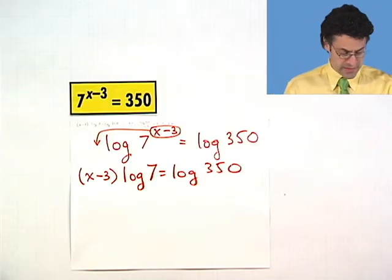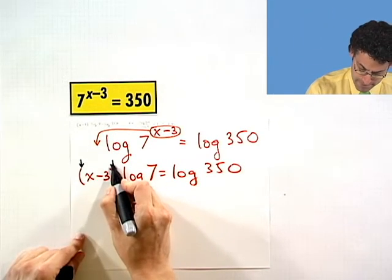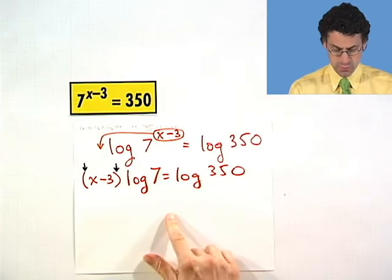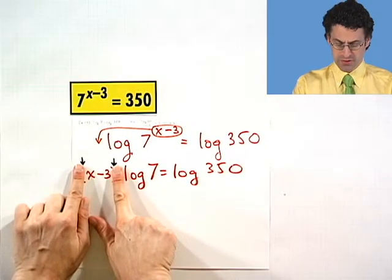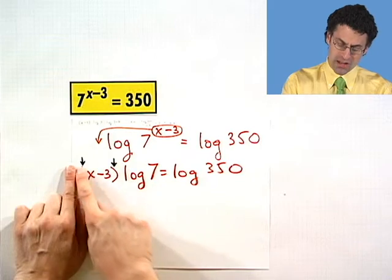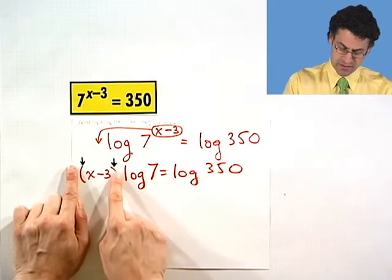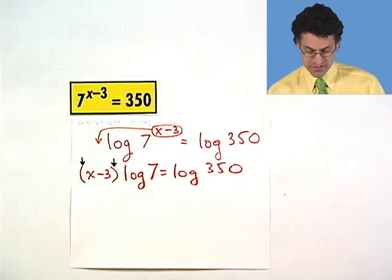Now let me point out that I put these parentheses here. Did you see that? That's because if I would not have put them in then only the 3 would be multiplied by the log 7. But I want the entire quantity to be multiplied by the log 7 so I've got to put parentheses around the whole thing to lasso it all and multiply it by the log of 7.